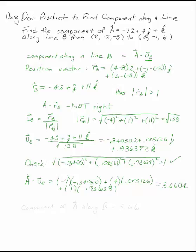That's a scalar. The component of vector A along line B is 3.66. It's a scalar. The direction is given by the line B that you started with.